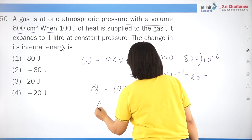Question 22: the correct statements related to thermodynamic work W. It is defined as ∫PdV — true. W is positive if the system expands (DV positive) — true. W is negative if the system contracts (DV negative) — true. So all three statements are correct, making option 4 (all of the above) the correct answer.